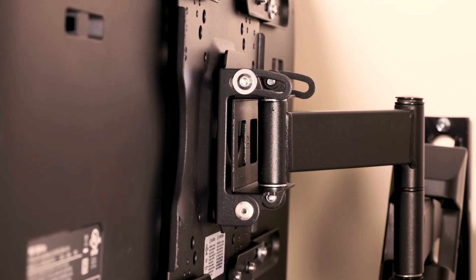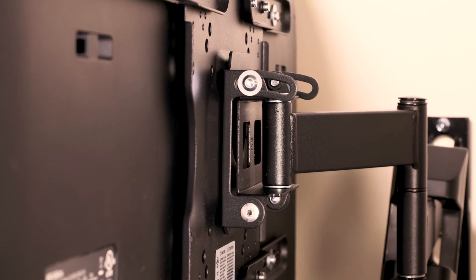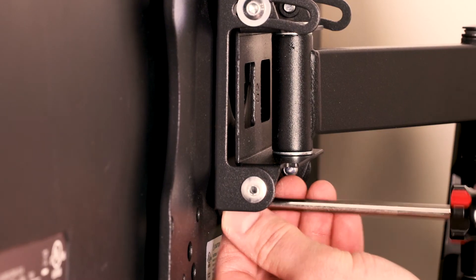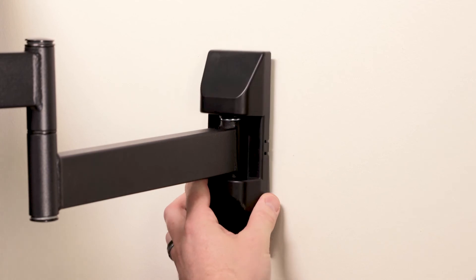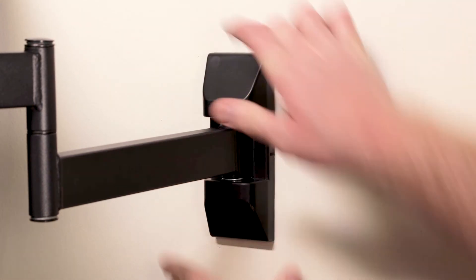In this final stage of installation, carefully lift your TV and hook it onto the mount. Tighten the safety screws located at the bottom of the mount, then slide the plastic cover toward the wall and over the wall plate.